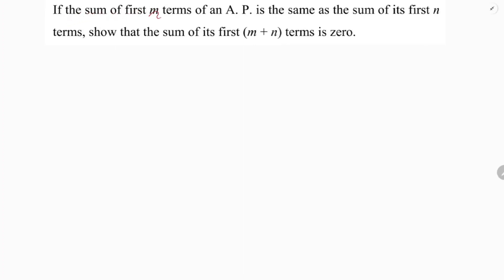If the sum of first m terms of an AP is the same as the sum of its first n terms, show that the sum of its first m plus n terms is zero.